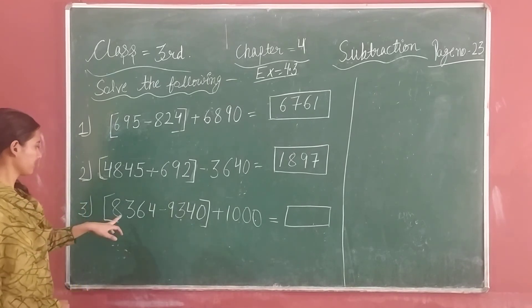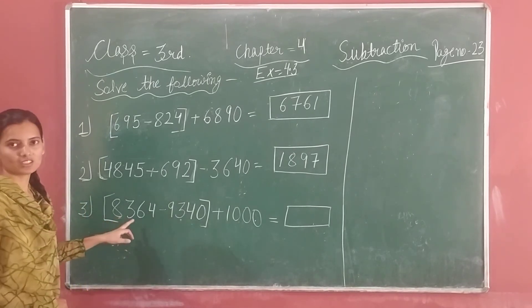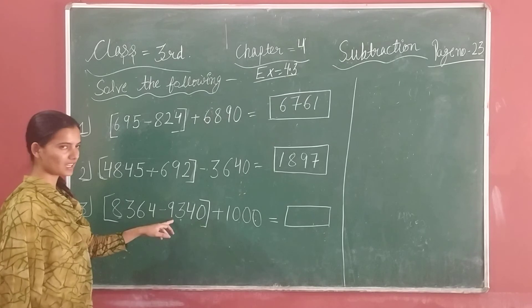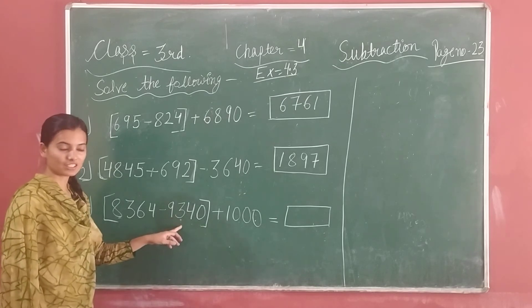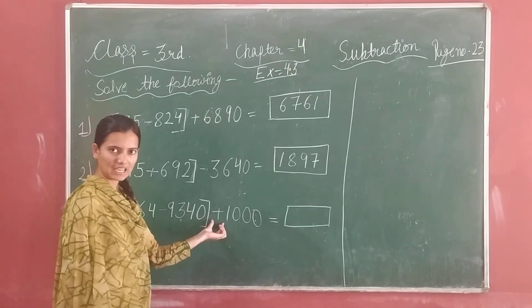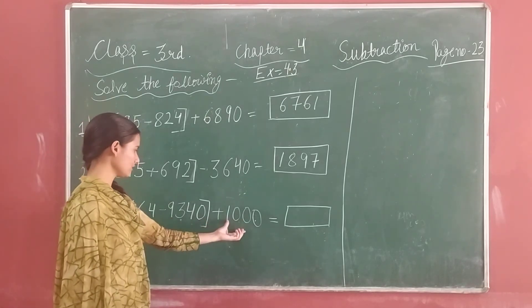Students, next technique: 8,364 minus 9,340. Coming — the answer is 5, 7, 1, 1.